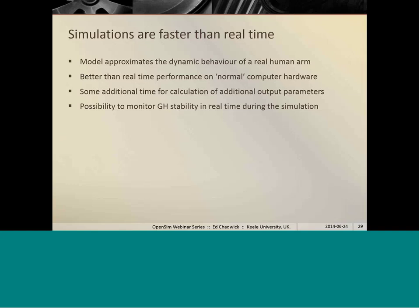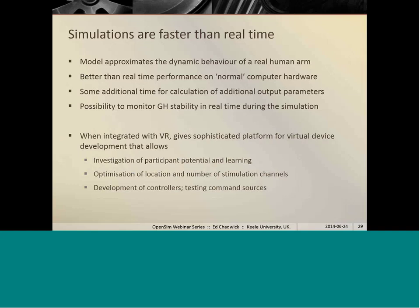We got better than real time performance on fairly normal computer hardware. It's a Core i5 laptop. So there's a lot of scope for improving the performance there by using faster and newer processors as well. There was enough additional time in the simulation loop after we calculated the integration to calculate additional output parameters such as the glenohumeral joint stability. That allowed us to monitor the stability in real time during the simulation as well as to produce additional visualizations.